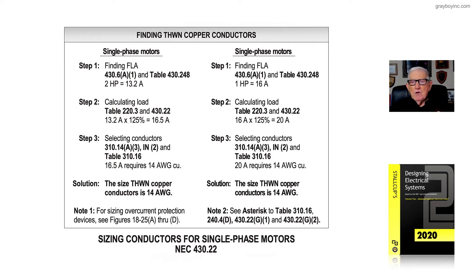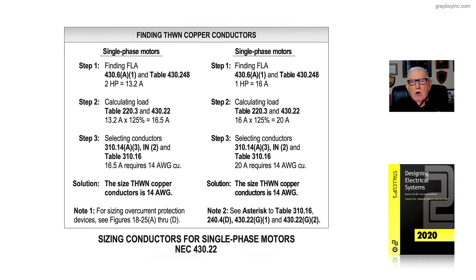Reviewing the illustration, to the right we have the single-phase motor — it's one horsepower. Step one: find the full-load current rating of the motor. Section 430.6A1 refers to Table 430.248, and the one-horsepower motor under the 115-volt column lists 16 amps.